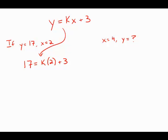Then subtract 3 from both sides. 14 equals 2 times k. Divide both sides by 2, and we get k equals 7.